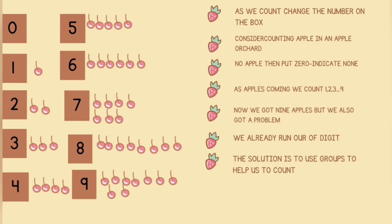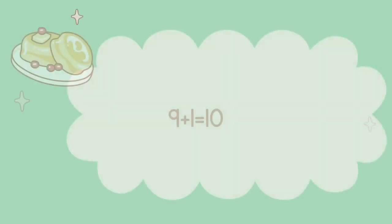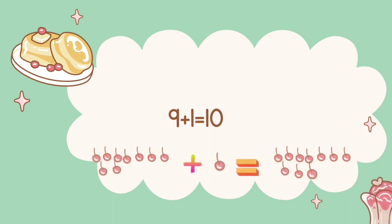Then as the apples come in, we begin to count: 1, 2, 3, 4, 5, 6, 7, 8, 9. Now we have got nine apples but we also have a problem — we have already run out of digits to count with. The highest digit we have is nine, but there are a lot of apples left to count. What will we do?